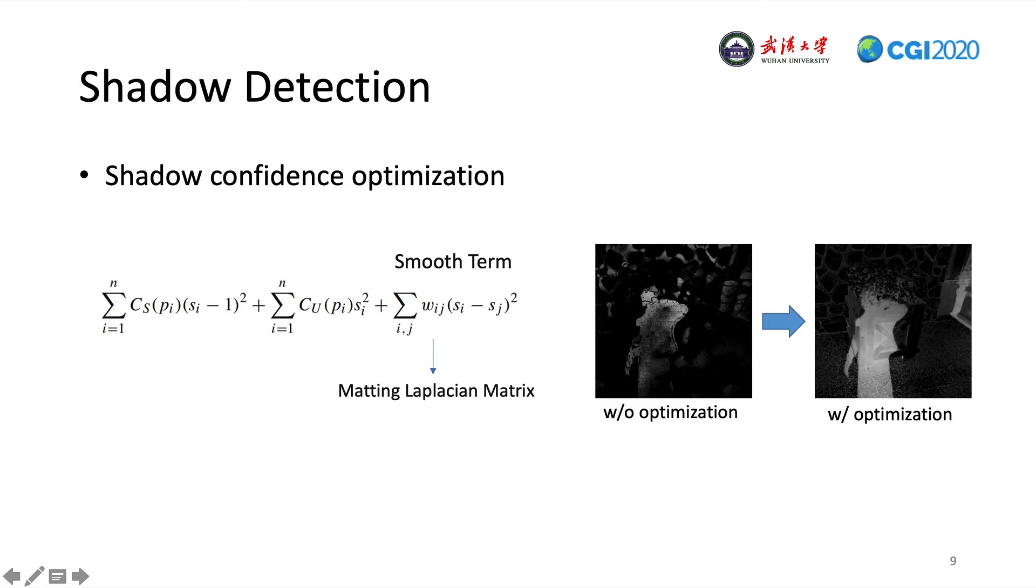The second term enables pixels with large non-shadow confidence to take a small value, which is close to 0. The last term is a smooth term with the weight, which is the element of the matting Laplacian matrix. As shown in the image, the optimized shadow confidence map is more accurate than the initial one. The shadow regions are more highlighted, and the gradient information around shadow boundary is preserved as well. It will benefit our shadow removal in the next step.